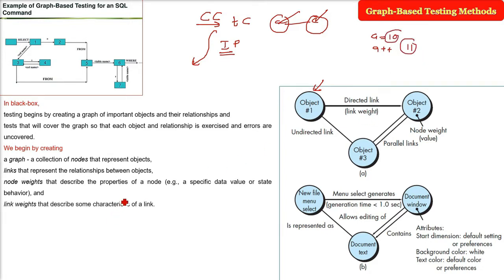And then the link weights, node weight also we can give, the link weights also we can give. So the link weights will describe some characteristic of a link. Nodes, they are represented by circles and these are connected by certain links. The link can be a different type.